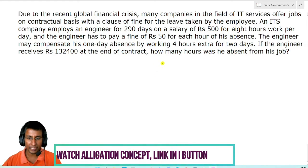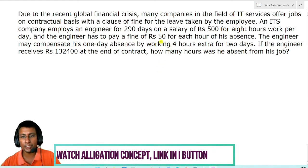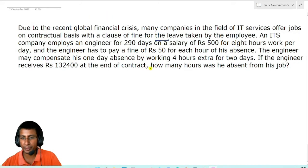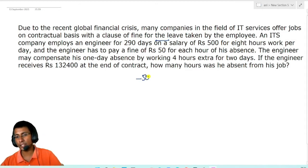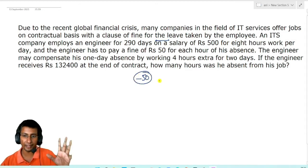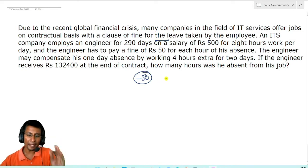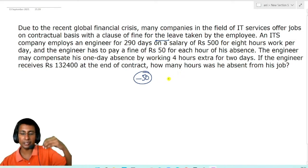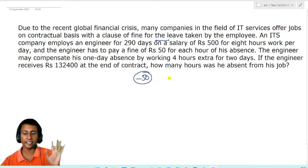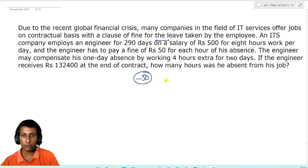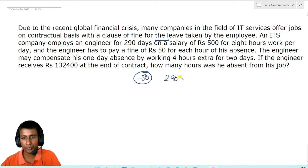If you analyze how much the minimum payment will be, it will be minus Rs 50 for every hour absent. If all hours were absent, then how much fine would be paid? Simply 290 × 8 × 50.